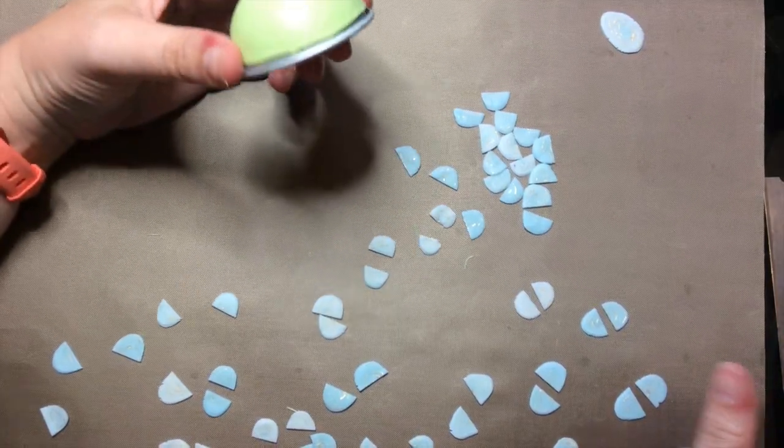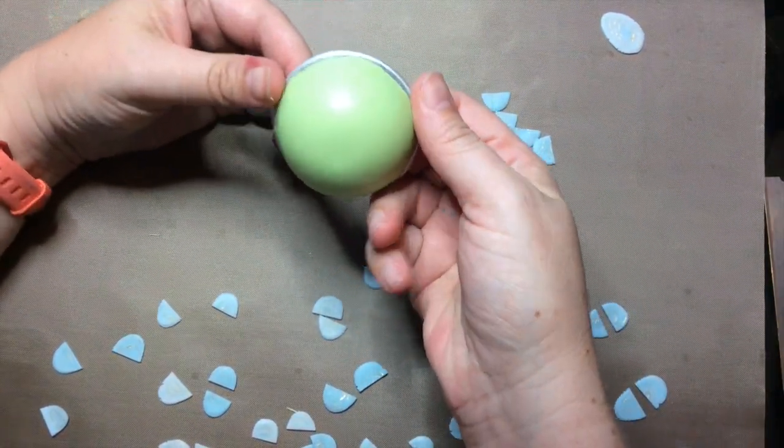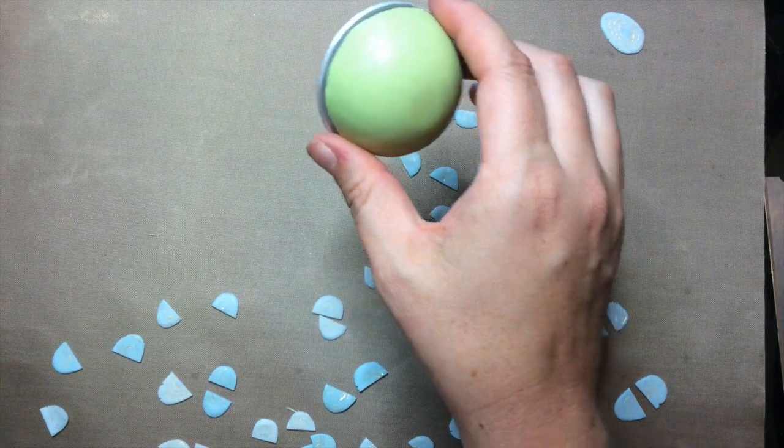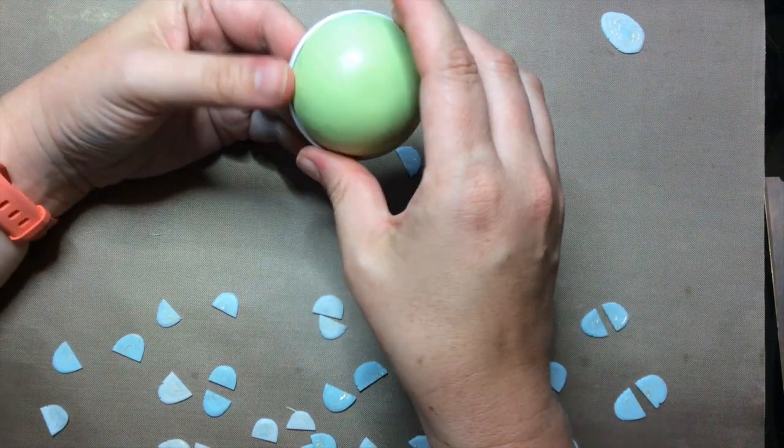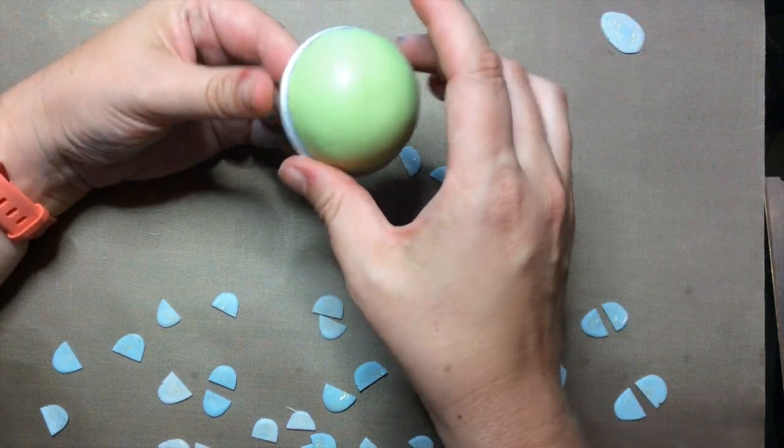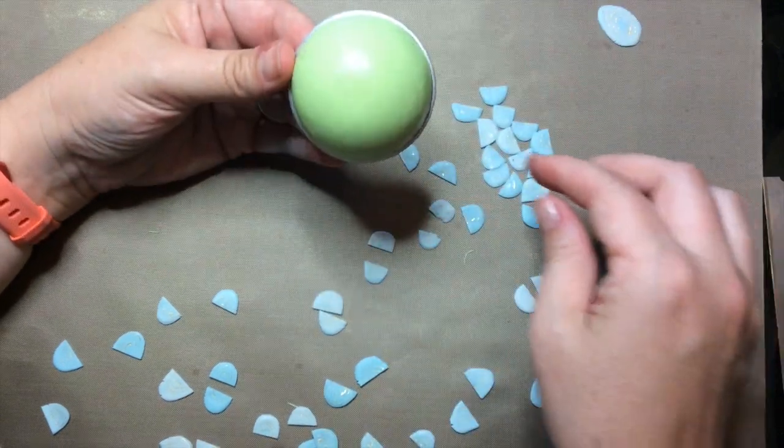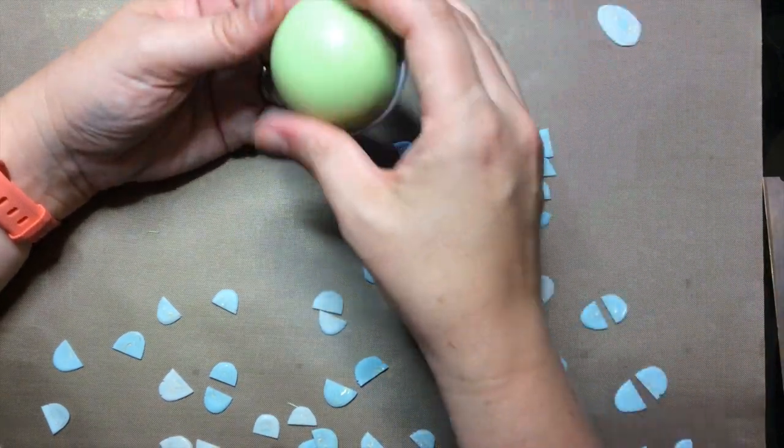You can do this project with flower petal canes or leaf canes or jelly roll canes, any kind of cane you want. So because I'm going for this mermaid feeling, that's why I'm using my fish scale cane.